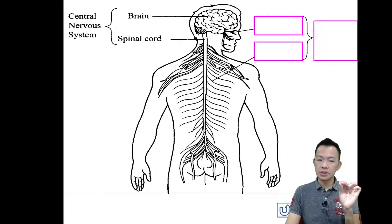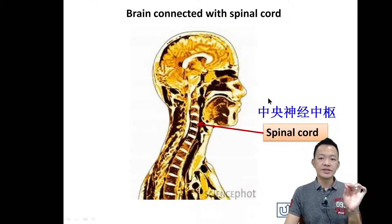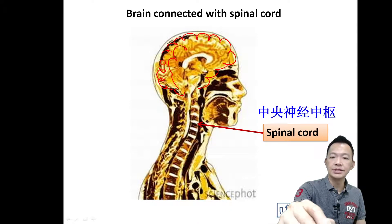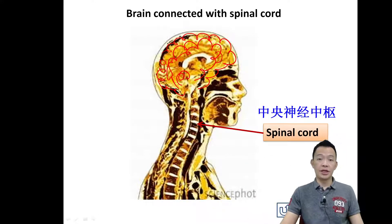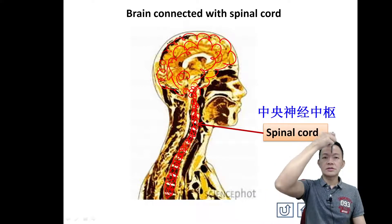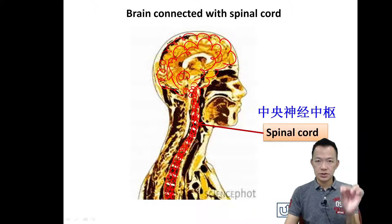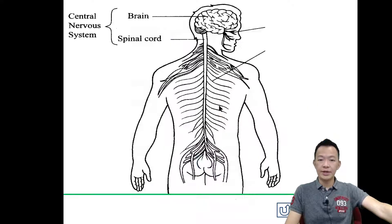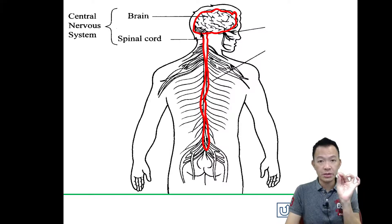The Central Nervous System contains two organs: number one, our brain — 脑袋; and number two, the spinal cord. What is the spinal cord? In Chinese, we call it 中央神经中枢. In our brain there are many nerve cells that control our body. All the nerve tissue joins together and is stored inside the backbone, forming the largest nerve pathway — we call it the spinal cord, 中央神经中枢, inside our backbone.